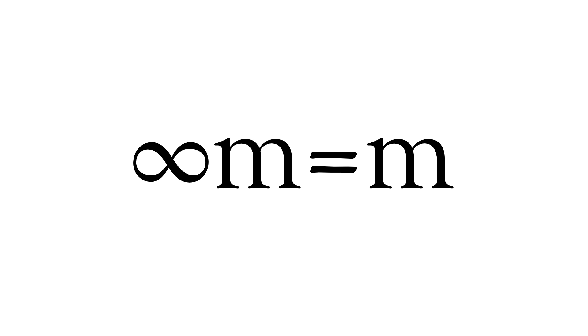Another common comment I kept getting was that there are two solutions to the following problem. Infinity multiplied by m equals m. The solution I presented was m equals zero.